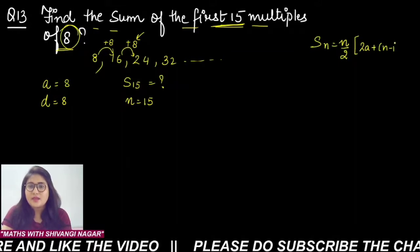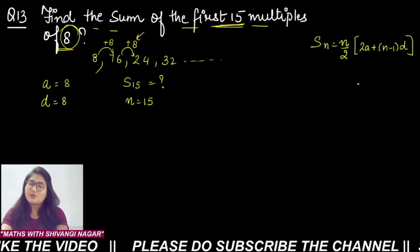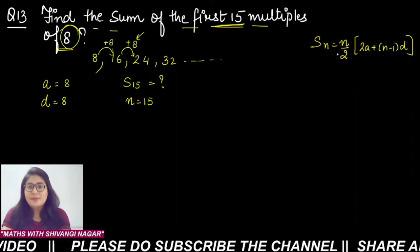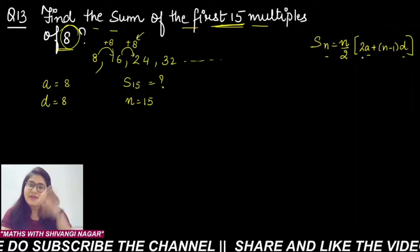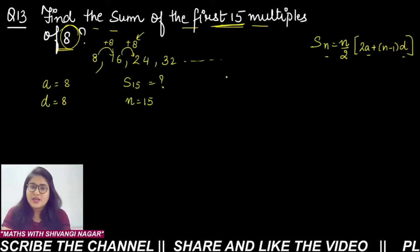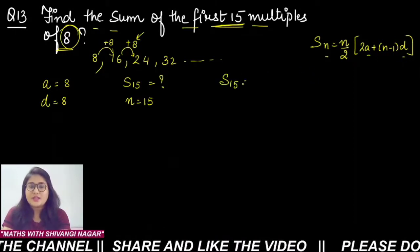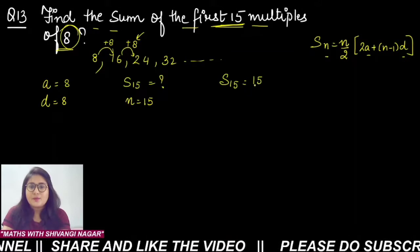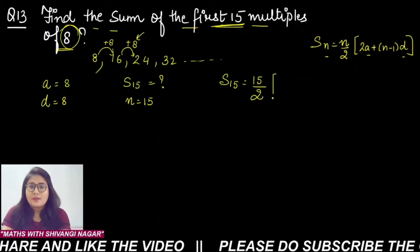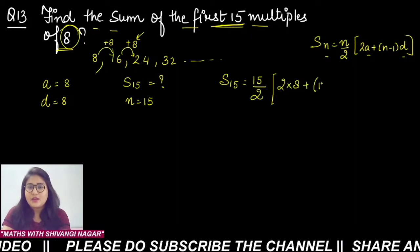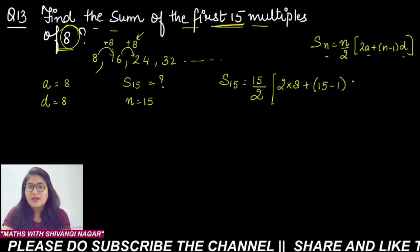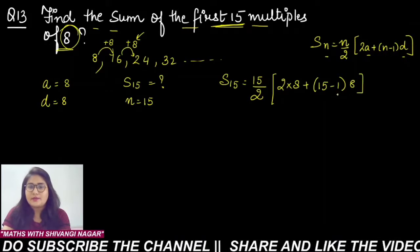This is the formula. Now you have the value of n, the value of a, the value of d. All values you can put and directly calculate S15. So S15 is what? 15/2 multiply by 2 multiply by 8, plus n value is 15 minus 1, and d value is 8.